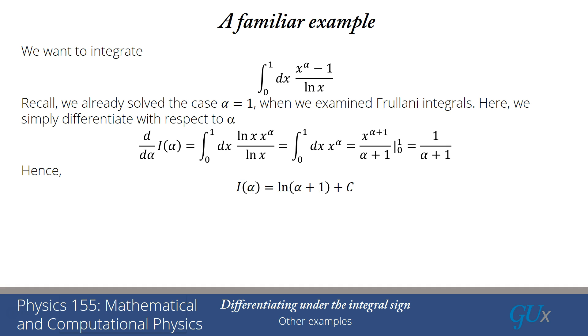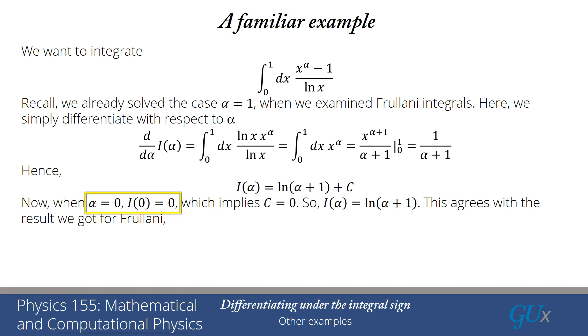I have to determine what the constant is. Well, if alpha is equal to 0, then I get 1 minus 1 in the numerator. So the integral is equal to 0. So by using alpha equals 0, and if I plug into the formula, that would give me log of 0 plus 1, which is log of 1. Log of 1 is 0. The total integral is 0, so that means c must equal 0.